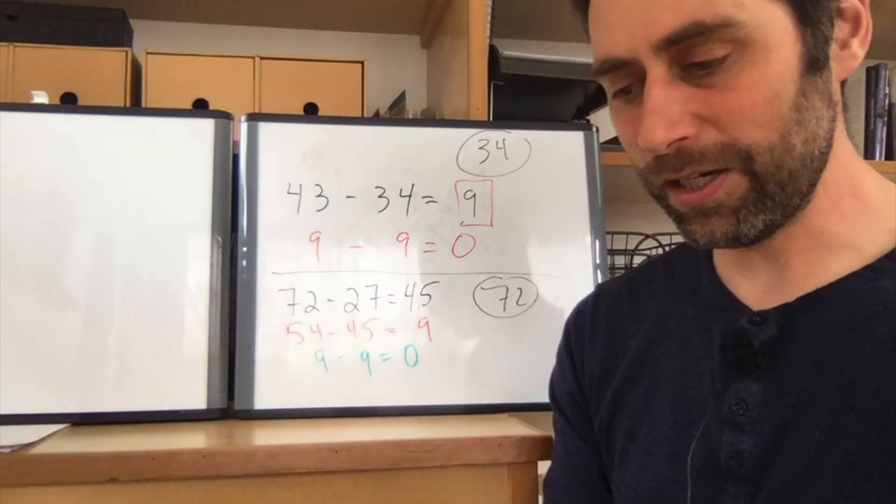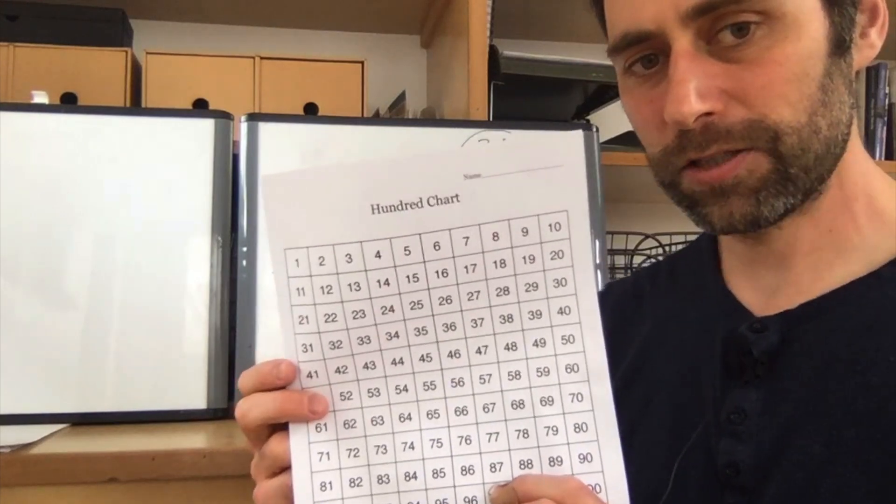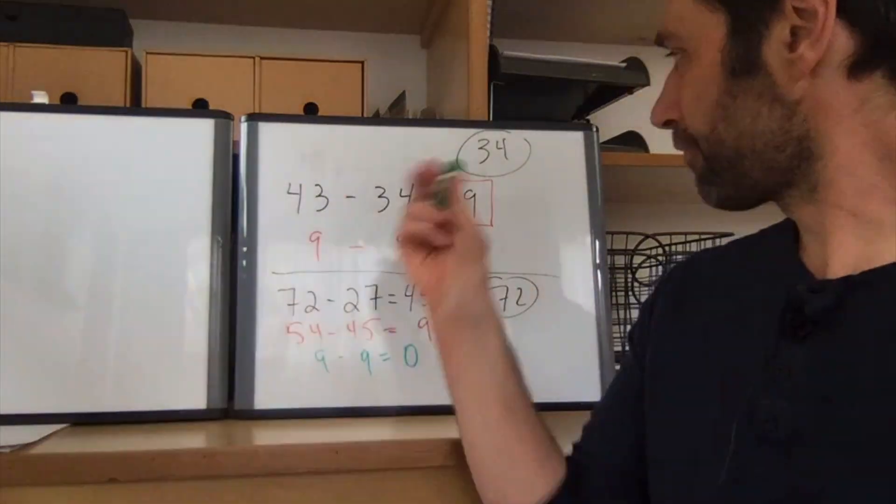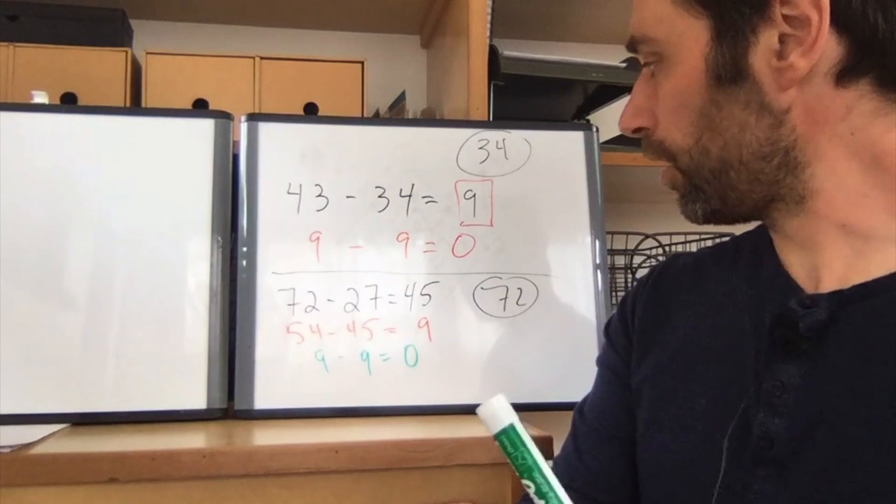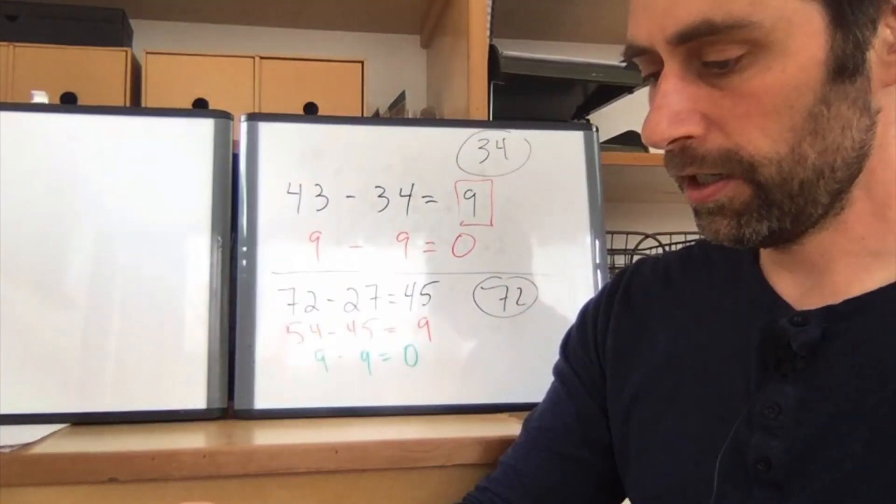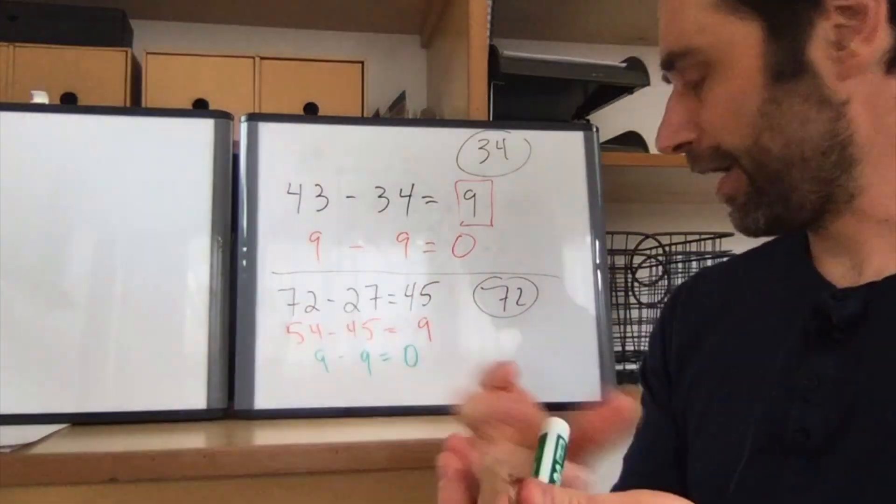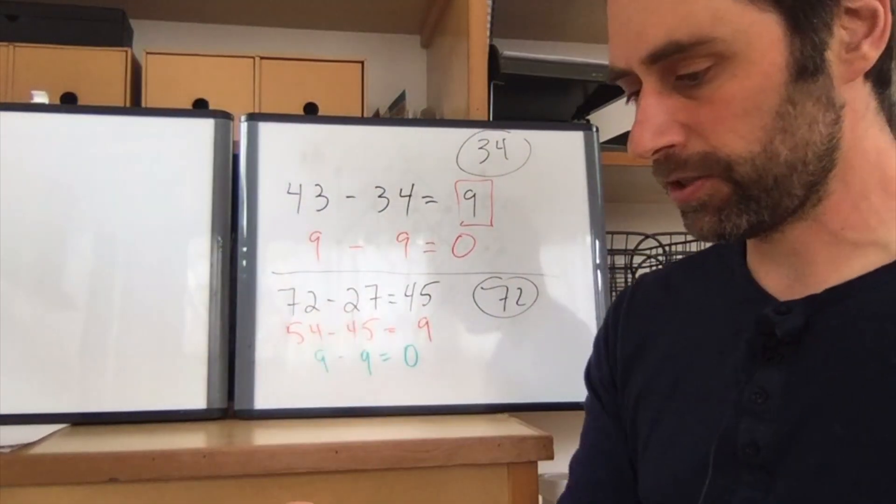The other thing that's really interesting to do here is to take a 100 chart and color coordinate it. So when I started with 34, I got to red. So maybe I would just like color 34 red or circle that one. I got to green, which is my next color when I started at 72.